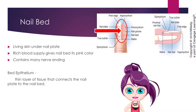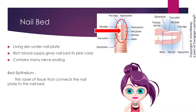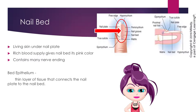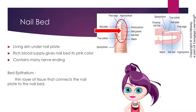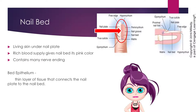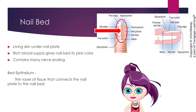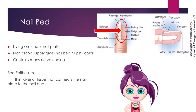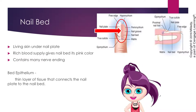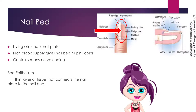The nail bed is the living skin underneath the nail plate. It contains a rich blood supply, which gives the nail bed its pinkish color, and contains many nerve endings. There is a thin layer of tissue that connects the nail plate to the nail bed, known as the bed epithelium.